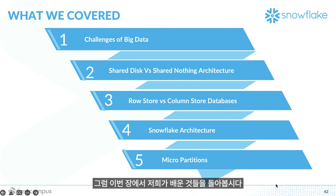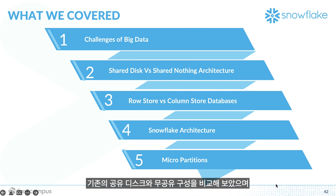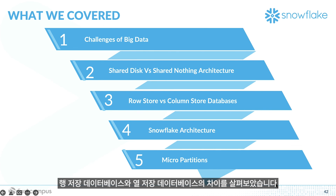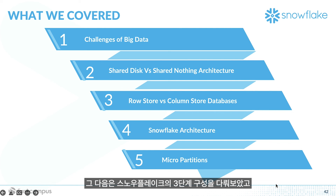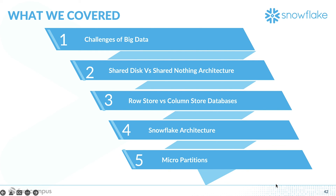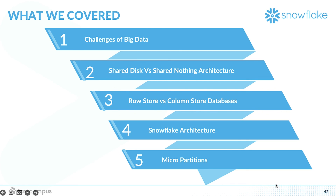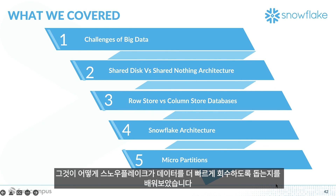In this section we covered: the challenges of big data, traditional shared disk versus shared nothing architecture, the difference between row store and column store databases, the three-layer architecture of Snowflake, the lifecycle of query execution, and finally what micropartition is and how it helps Snowflake retrieve data faster.